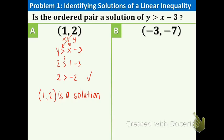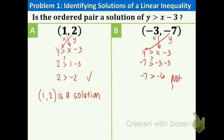Now let's look at part b. We're doing the same thing with y > x − 3. Plug in −3 for x and −7 for y: −7 > −3 − 3, which gives −7 > −6. This is not true — negative six is actually greater than negative seven. So the point (−3, −7) is not a solution. So there we have an example of a solution and a non-solution.